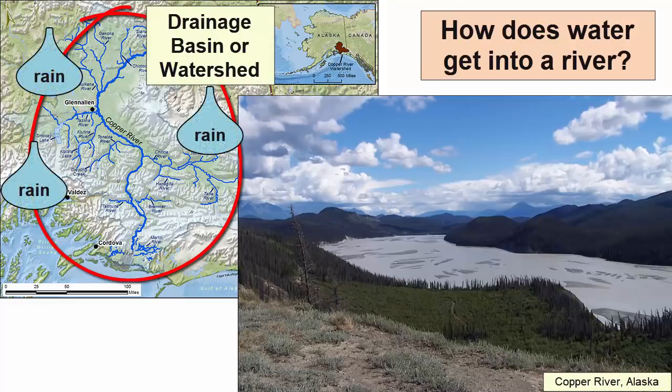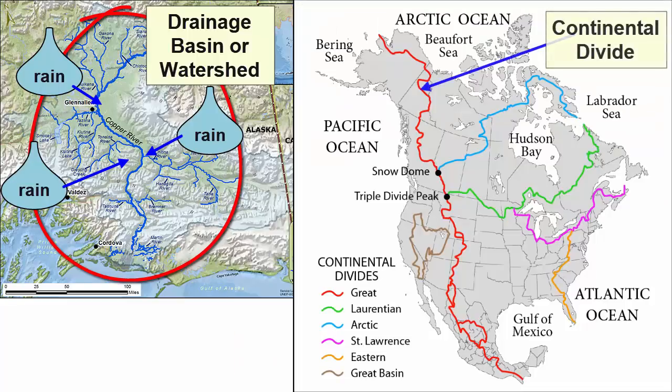How does water get into a river? A river's drainage basin or watershed is the area of land in which all the rain that falls will ultimately make its way into that river. The line between two drainage basins or watersheds is called a divide. The continental divide in the United States runs along the top of the Rocky Mountains. Water that falls on one side of this divide will travel east and south into the Mississippi River basin.